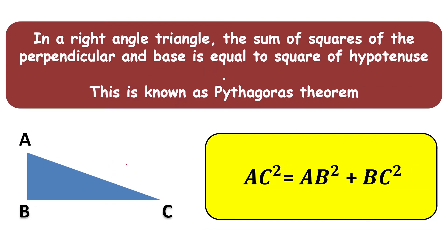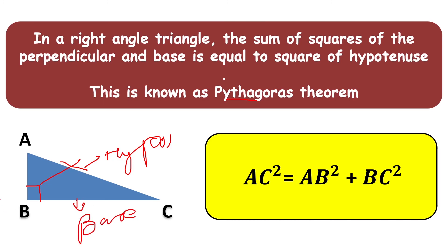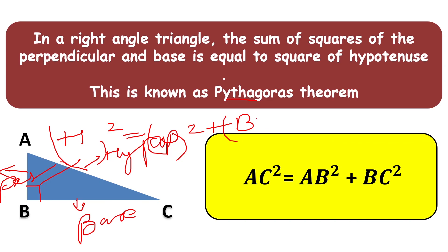The next rule is the Pythagorean theorem: in a right-angle triangle, the sum of the squares of the perpendicular and base is equal to the square of the hypotenuse. As you can see in the figure, the side opposite the right angle is called the hypotenuse, and the other two sides are the base and the perpendicular. So: hypotenuse squared equals perpendicular squared plus base squared.